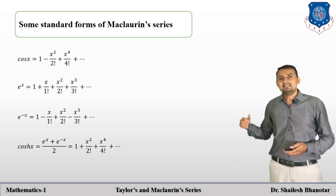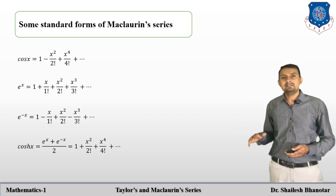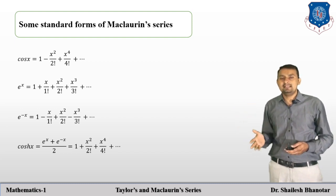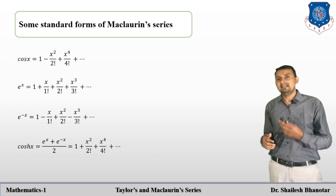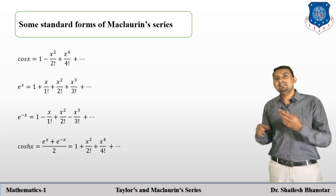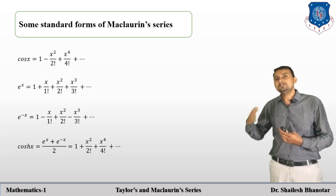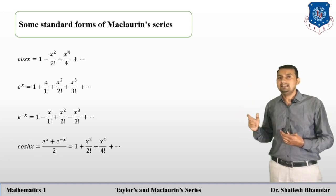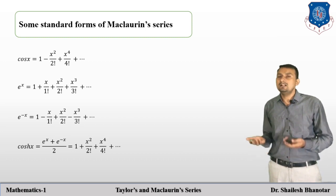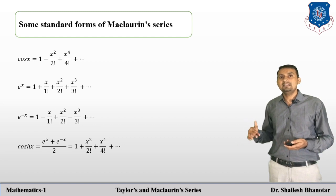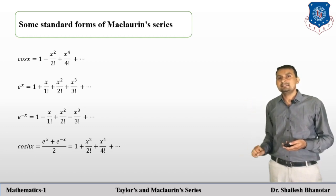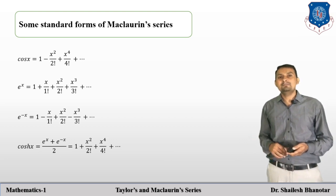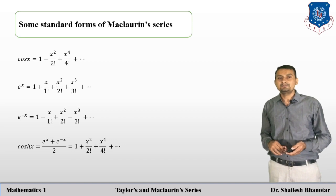You can also derive the expansion of cosh x directly: set f(x) = cosh x. The derivative of cosh x is sinh x, and the derivative of sinh x is cosh x, so the derivatives alternate. Determine all derivatives at x = 0 and substitute into the Maclaurin series. Notice the difference between cos x and cosh x: in cos x the terms alternate in sign, but in cosh x all terms are positive since the derivatives are never negative.